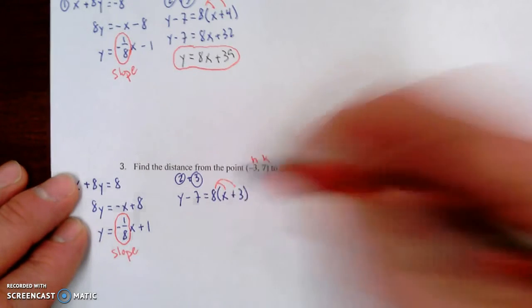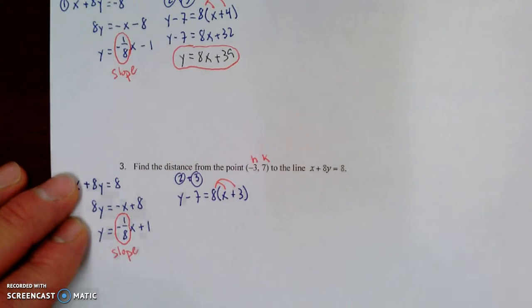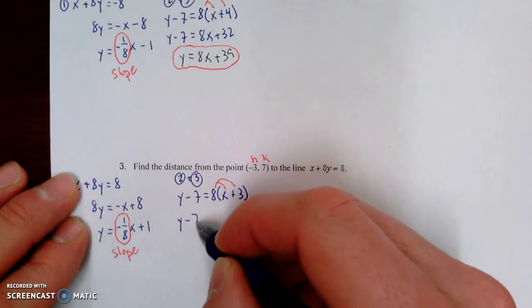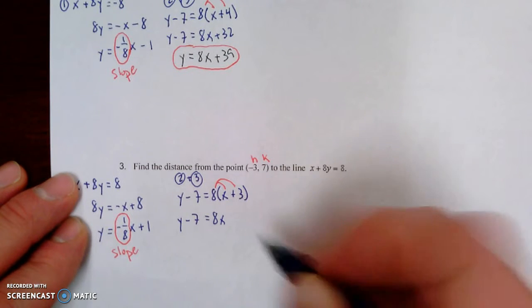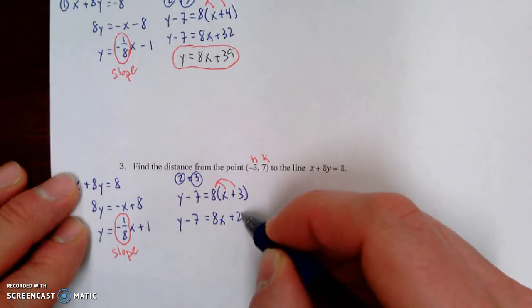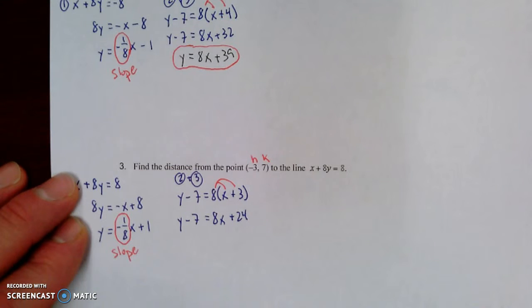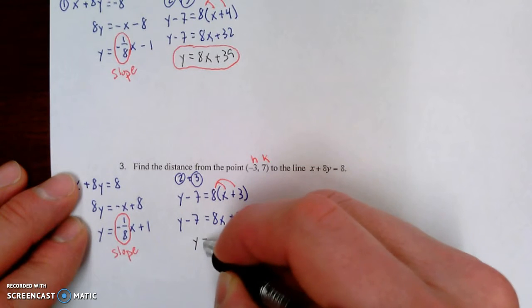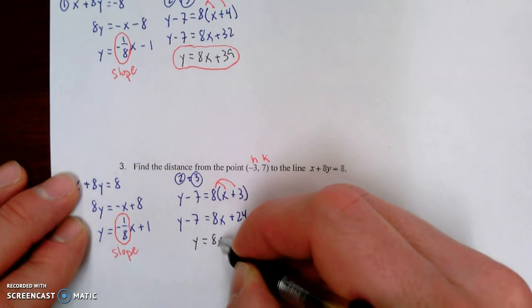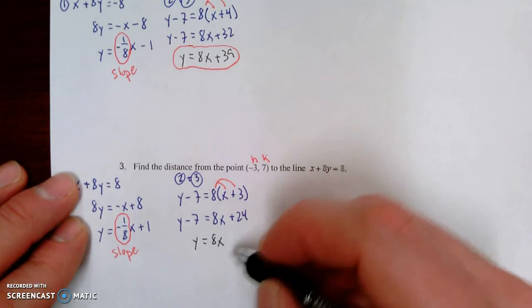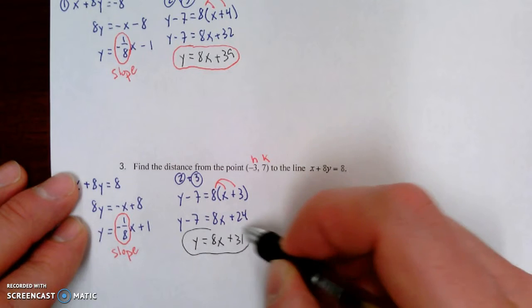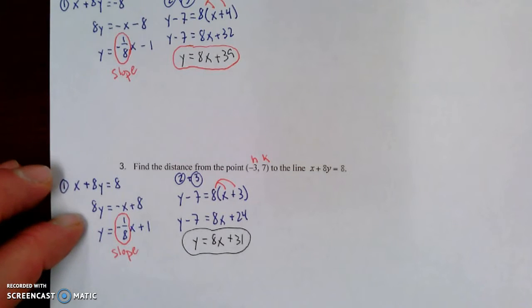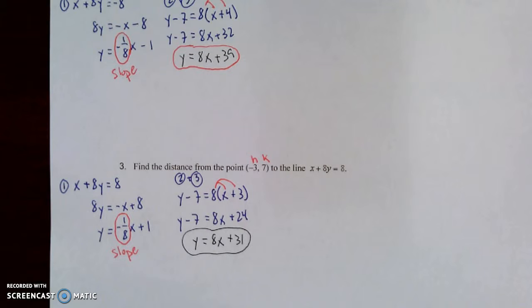First thing we're going to do to change it into slope-intercept form is use the distributive property. So over here, nothing changes. Eight times x is eight x, and eight times three is 24. Now we're going to add seven to both sides, and we get y equals eight x, and then 24 plus seven is 31. And there's our equation in slope-intercept form of our perpendicular line. I hope you got that right.